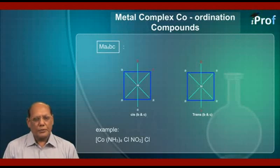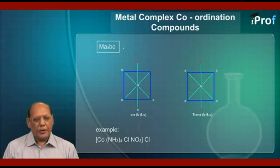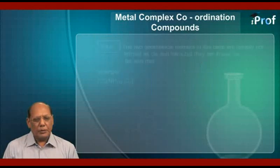In the cis form, B and C are cis to each other. In the trans form, B and C ligands are trans to each other. Next, we are going to discuss the formula MA3B3.